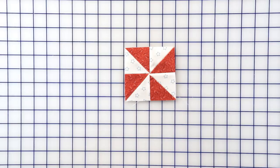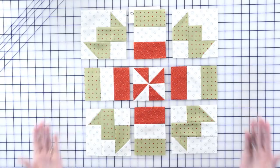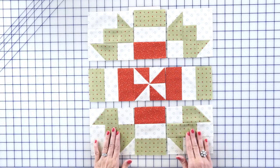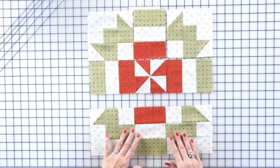So now it's time to just wrap it all up. Just put all your units out, pay attention to the direction of everything, and then you're just going to sew them together in rows, press toward your middle units, then put your rows together, and press toward the outside.